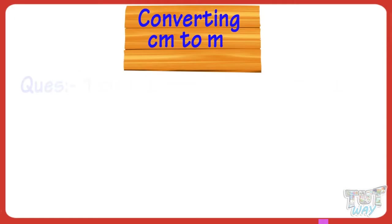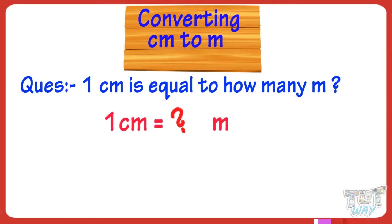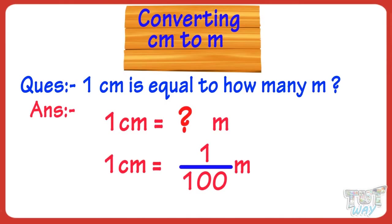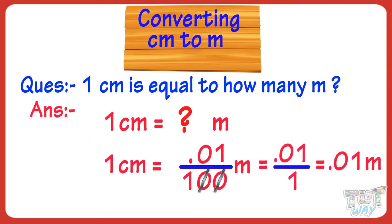So 25 centimeters is equal to 0.25 meters. Now, 1 centimeter equals 1 divided by 100 meters. We cut two zeros and put the decimal after two digits from the right. But as there is only one digit, we put a 0 on the left and insert the decimal. So we get 0.01. So 1 centimeter equals 0.01 meters.